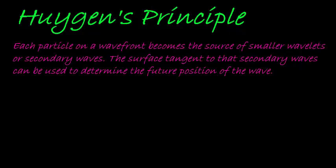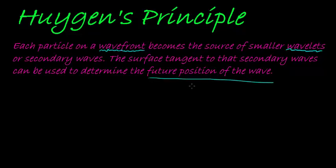Hi again. In this video we are going to deal with Huygens' Principle, and this refers to waves. His principle states that each particle on a wave front becomes the source of smaller wavelets — or secondary waves, which are the same thing. The surface tangent to the secondary waves can be used to determine the future position of the wave front.